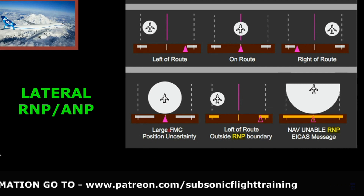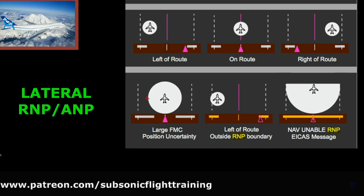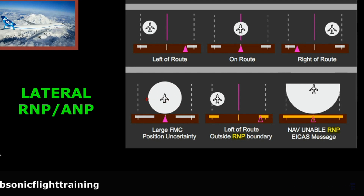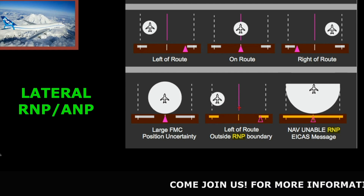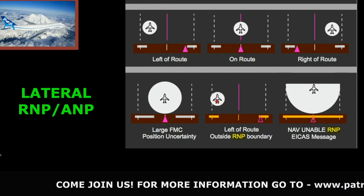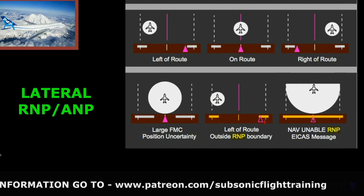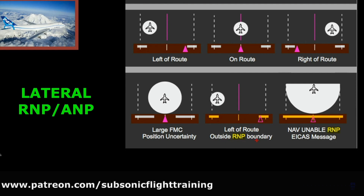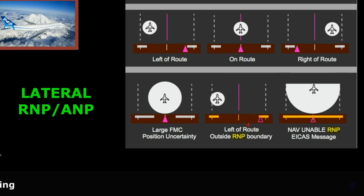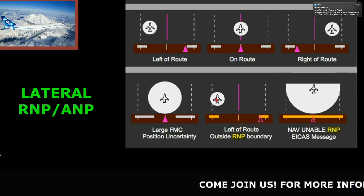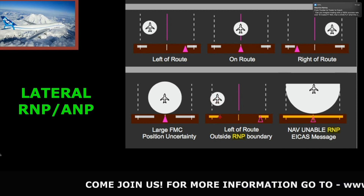This represents a large FMC position uncertainty — the bars are bigger and the ANP has grown, getting closer to the RNP limit. If we're to the left of the route we need to correct right, but if we drift too far left and the ANP starts to infringe on the RNP, the scale itself will turn amber, because now we're outside the RNP boundary. The bars haven't changed because the ANP hasn't changed; it's just the aircraft position has changed in reference to the RNP, and we're infringing on it.